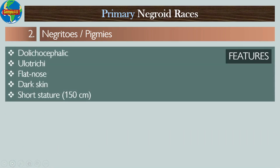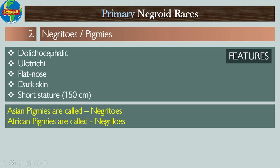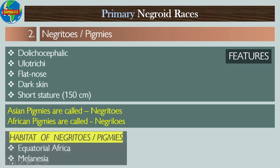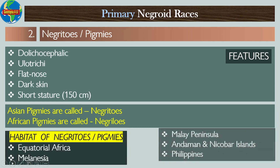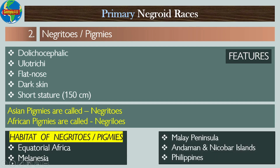Number two: Negritos (Pygmies). Their features include: dolichocephalic, ulotrichous hair, flat nose, dark skin, and a very short stature of around 150 centimeters. Asian pygmies are called Negritos, whereas African pygmies are called Negrilloes. The habitat of the Negritos includes equatorial Africa, Melanesia, the Malay Peninsula, Andaman and Nicobar Islands, and the Philippines.